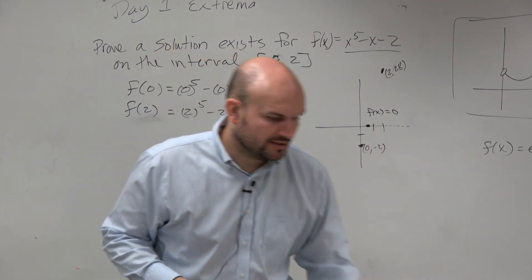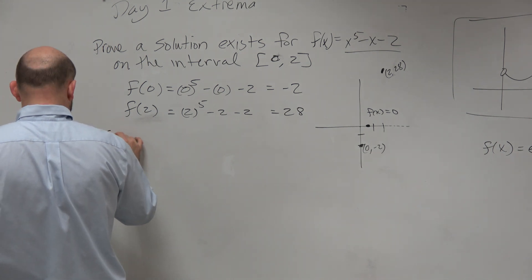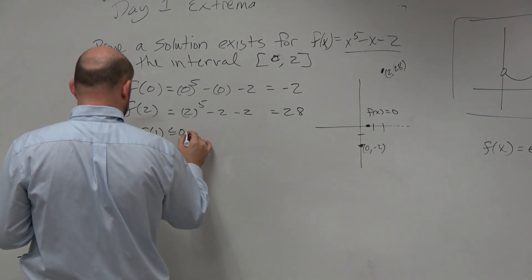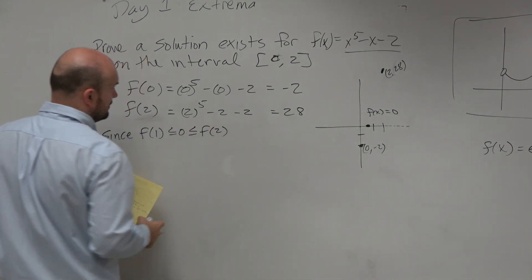And the way that we're going to write that is we'll write it just like this. Since f of 0 is less than or equal to 0, which is less than or equal to f of 2.